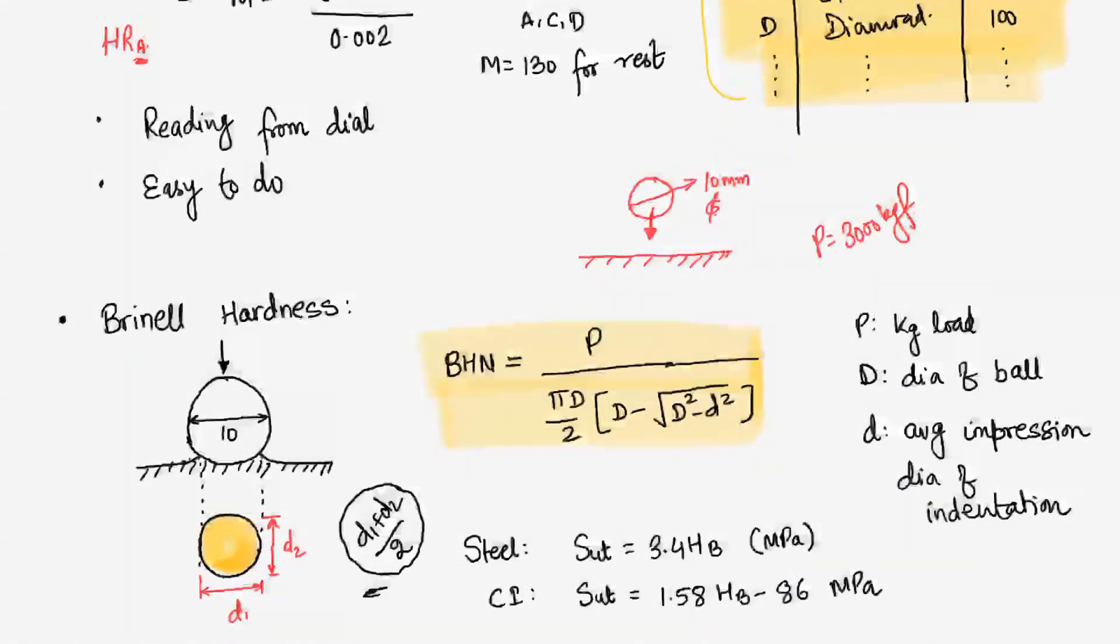This formula we use, that is basically load divided by surface area of the indentation. We have load divided by area. What will be the units? It will be in stress terms. So we will be getting the units of Brinell hardness in terms of kg force per cm² or we can say megapascal also.